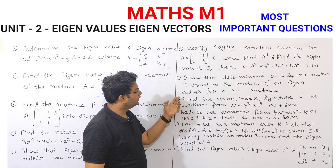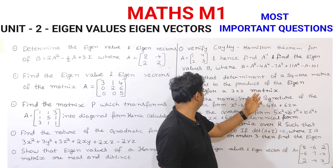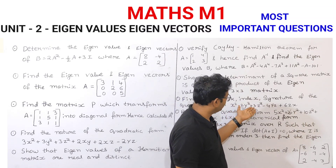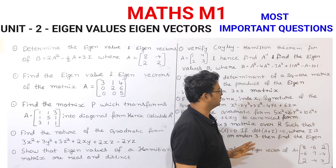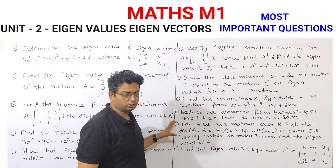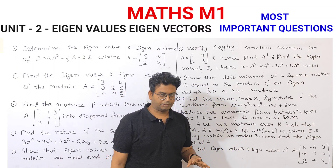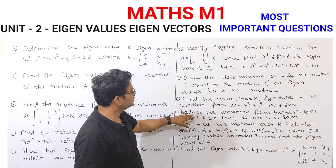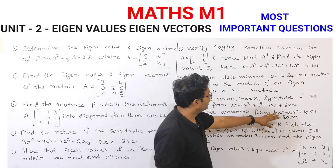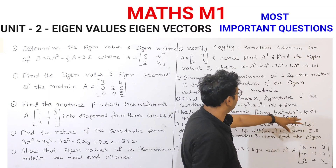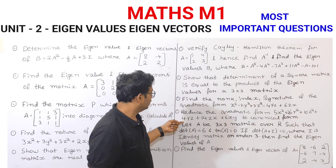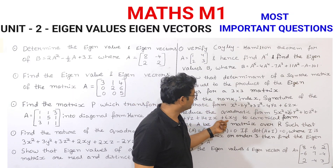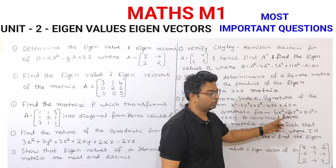Next, show that the determinant of a square matrix is equal to the product of the Eigen Values, for a 3 by 3 matrix. Next, find the rank, index, and signature of the quadratic form: X squared minus 2Y squared plus 3Z squared minus 4YZ plus 6ZX. After that, reduce the quadratic form 5X squared plus 26Y squared plus 10Z squared plus 4YZ plus 14ZX plus 6XY to canonical form.